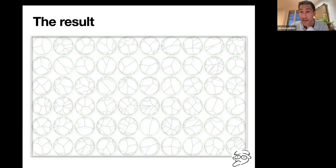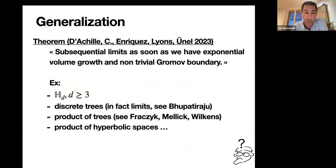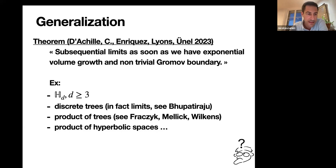The proof is just a few pages once you get the idea of the theorem. The methodology is very robust — it works virtually for any space where you have exponential volume growth and non-trivial Gromov boundary or Busemann boundary. For example, it works exactly mutatis mutandis for higher dimensional hyperbolic space, discrete trees — this was already studied by a student of Russ Lyons, though not published. And it works in the work of Amanda and collaborators for products of trees, products of hyperbolic spaces, and symmetric spaces for higher-rank semisimple groups. I will stick to hyperbolic space for this talk.